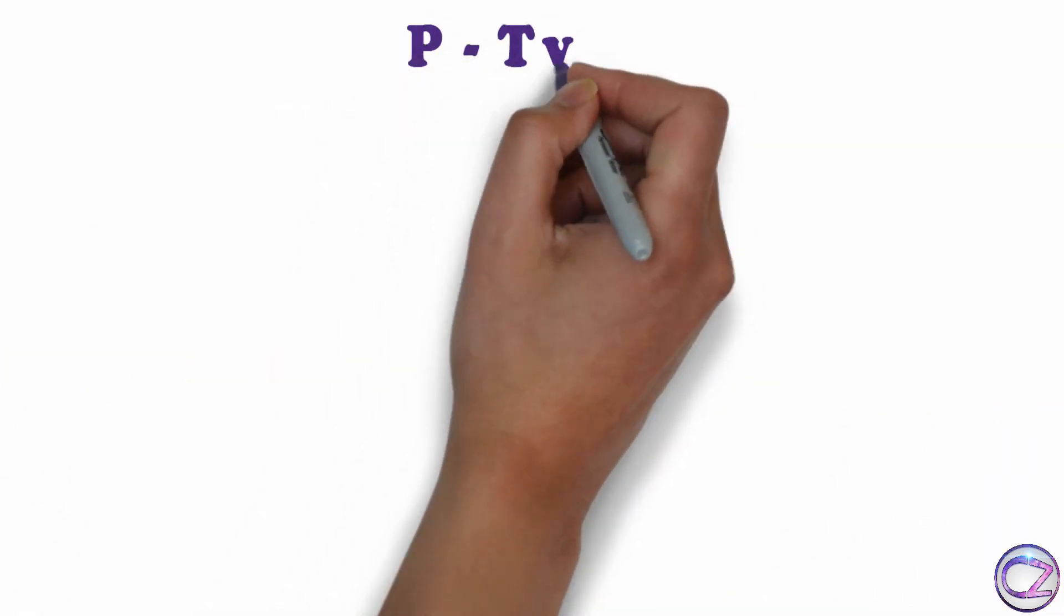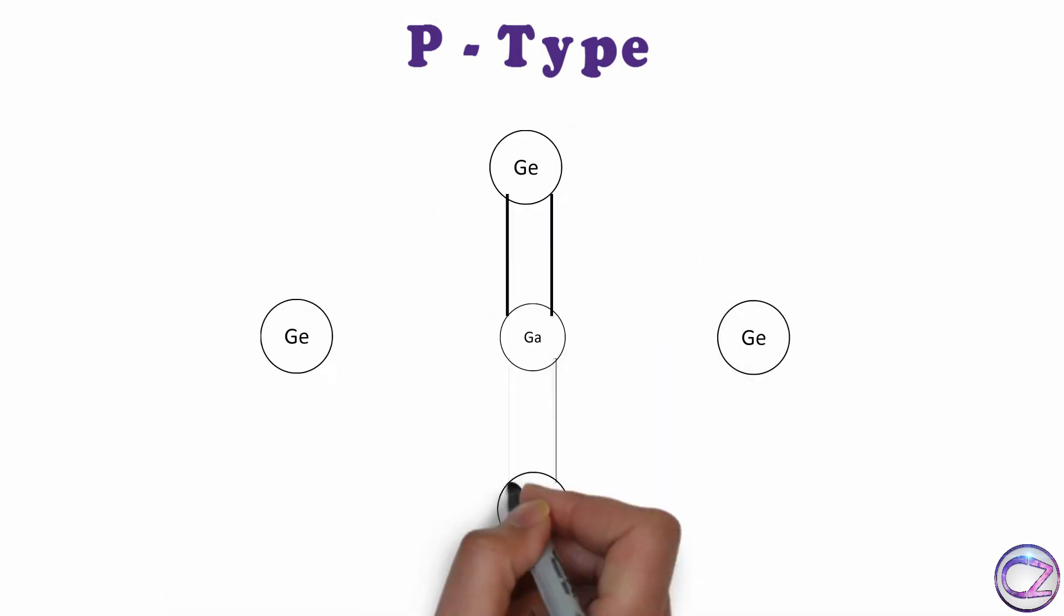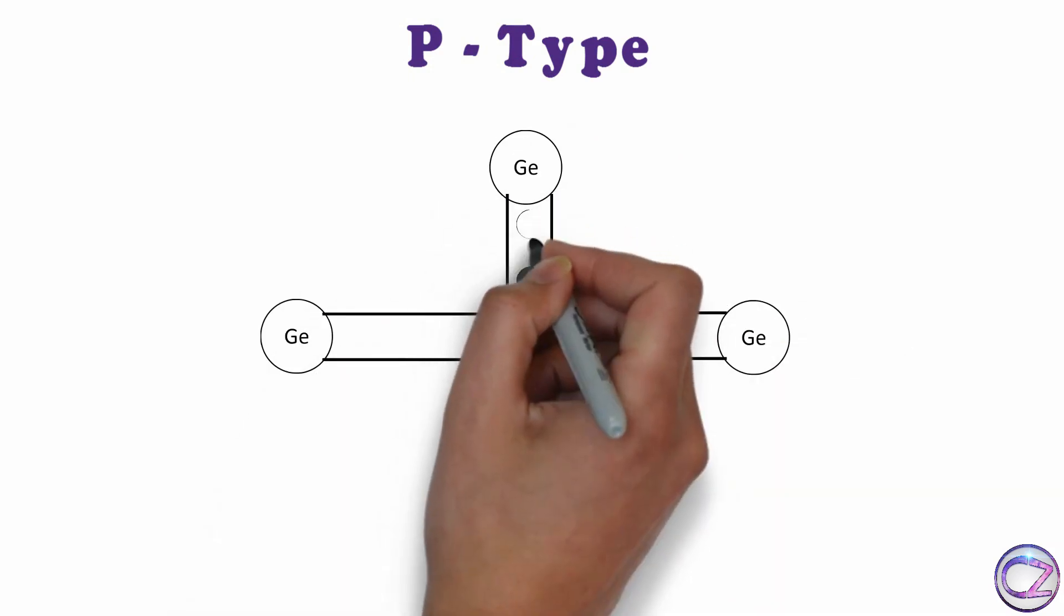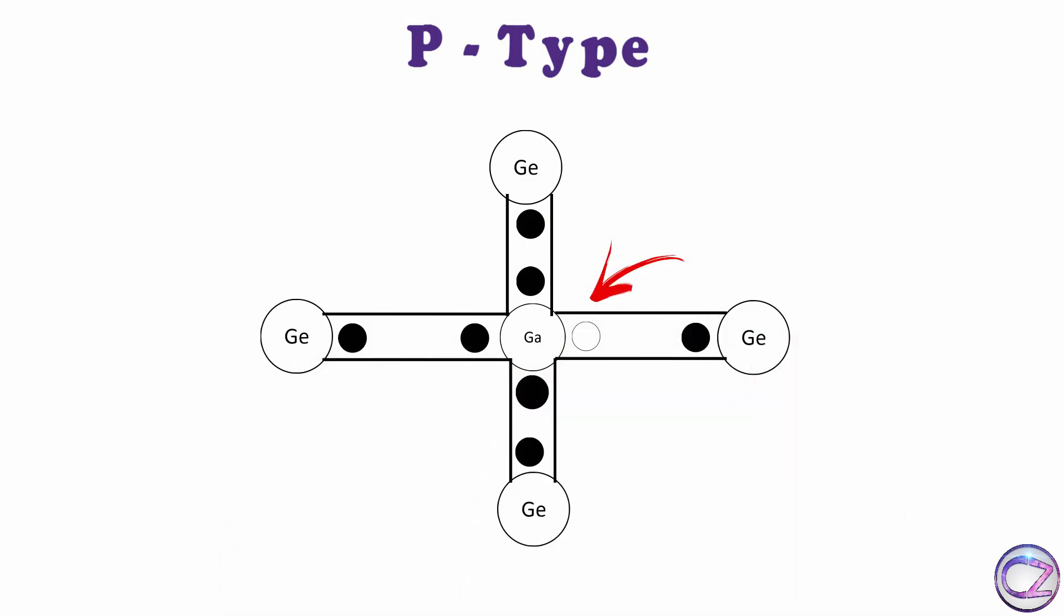First, p-type. If we replace a germanium atom with a valency 3 element atom, like Boron, Aluminium, Gallium, etc., then we will get a hole. Wait, why a hole? After replacing this atom, they again try to create covalent bonds. All good, just lack of an electron. This lack creates a hole.